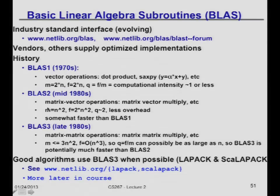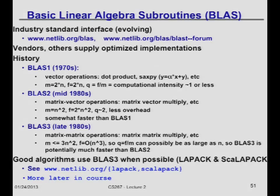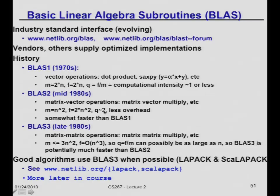Later, machines changed and the standards committee met again and agreed on BLAS Level 2 — matrix-vector operations, with matrix-vector multiply as the canonical example, plus about 15 subroutines including solving triangular systems. For matrix-vector multiply on an n-by-n matrix, you read n² entries and do 2n² floating point operations, so the computational intensity goes from 1 all the way to 2. That's a good thing, and it was quite a bit faster for the vector machines of the day. But the cost of communication was still killing you because the intensity was only 2, so they decided to go to BLAS Level 3.